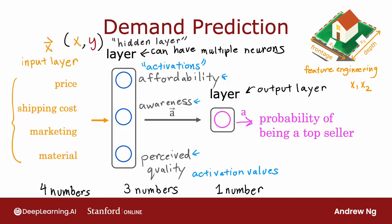To summarize, a neural network does this: the input layer has a vector of features — four numbers in this example — which is input to the hidden layer, which outputs three numbers, a vector of activations. Then the output layer takes those three numbers and outputs one number, the final prediction of the neural network. One note: even though I described this neural network as computing affordability, awareness, and perceived quality, one of the really nice properties of a neural network is that when you train it from data, you don't need to explicitly decide what features such as affordability the network should compute. Instead, it will figure out all by itself what features it wants to use in the hidden layer — and that's what makes it such a powerful learning algorithm.